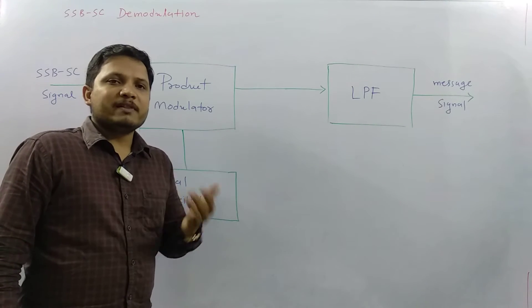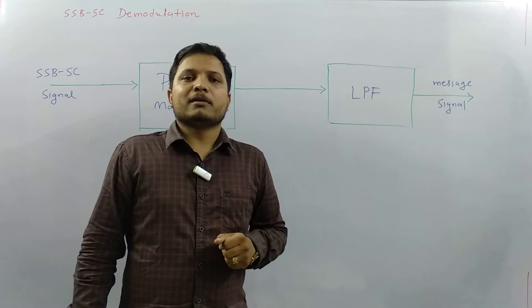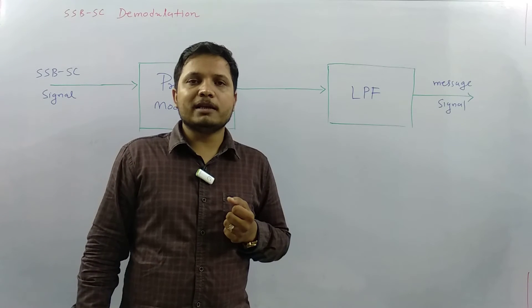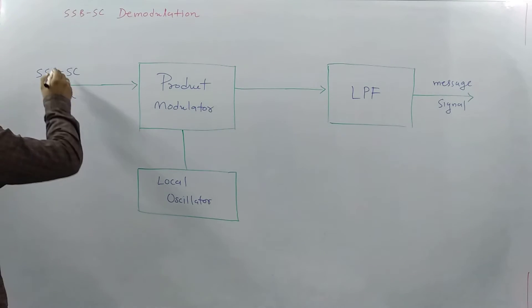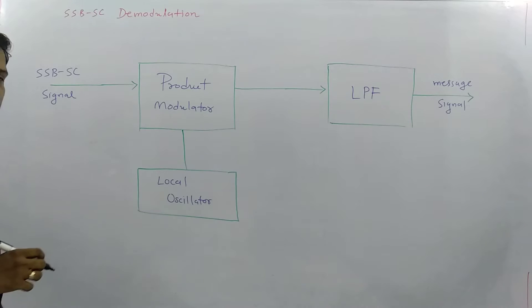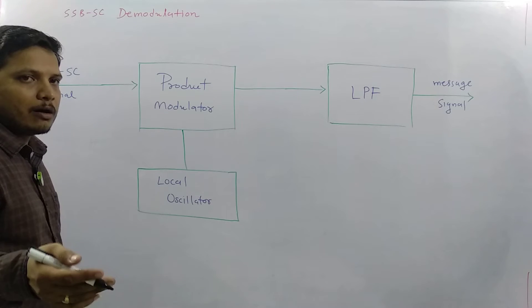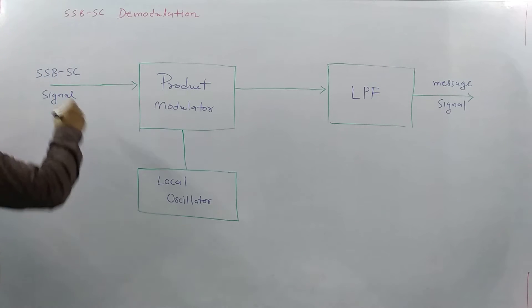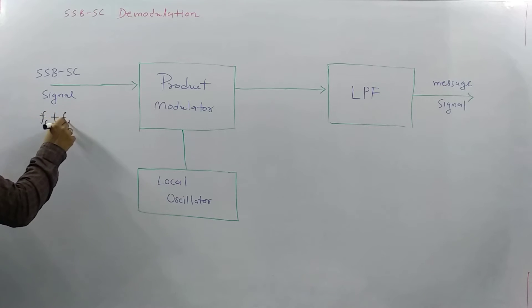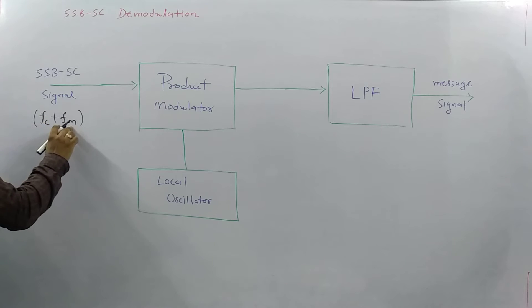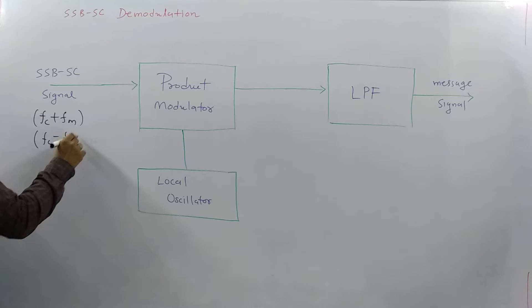In this process, the input signal will be an SSB-SC signal and the output will be the original modulating signal. The SSB-SC input signal could be the upper sideband or the lower sideband. The signal possibilities are FC plus FM, where FC is the carrier frequency and FM is the modulating signal frequency, or it could be FC minus FM.